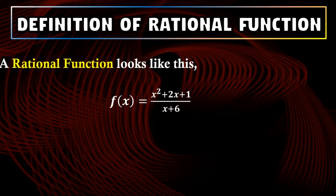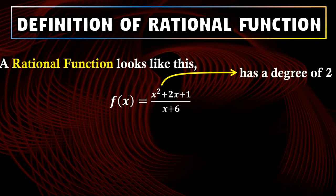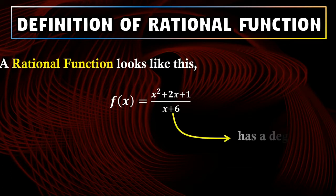In this example, the numerator has a degree of 2. As I've said in the previous lessons, degree is the highest exponent of an expression. While the denominator has a degree of 1.